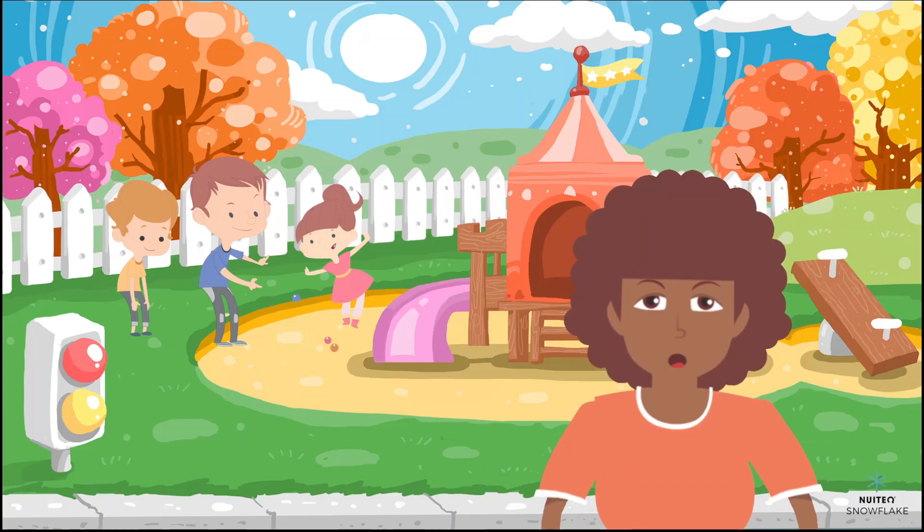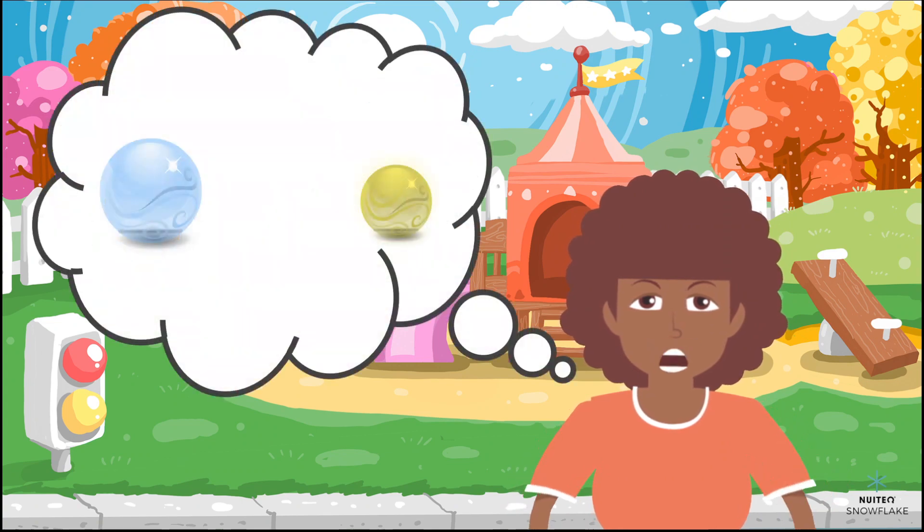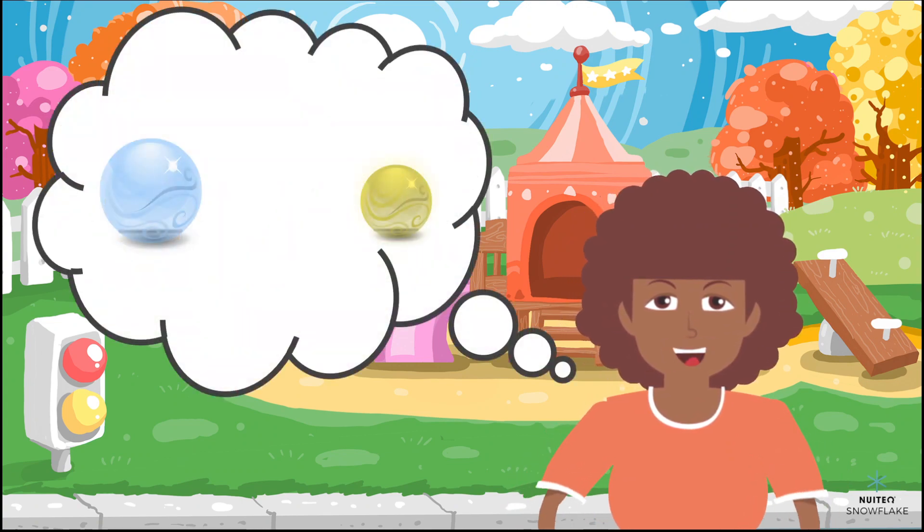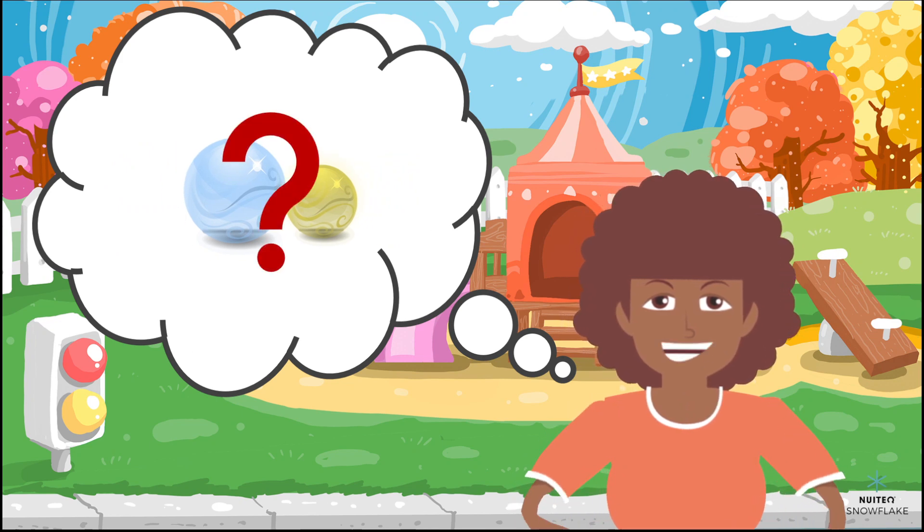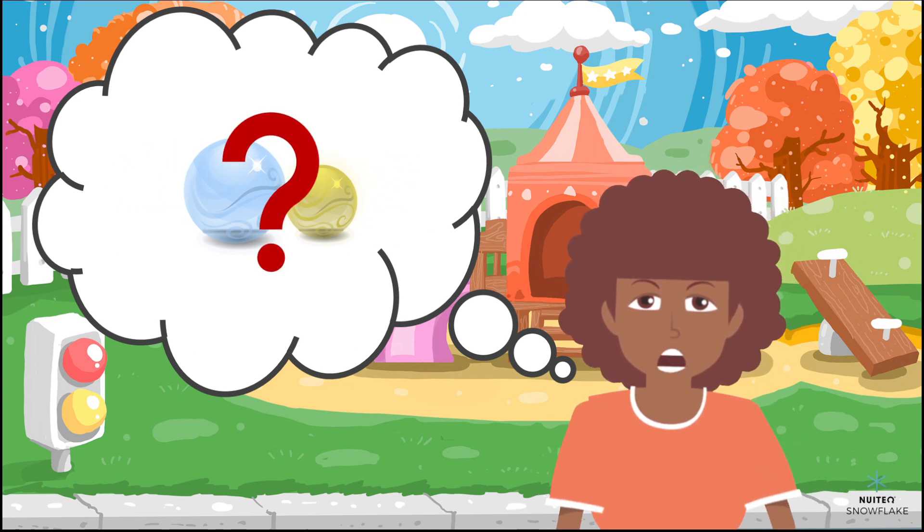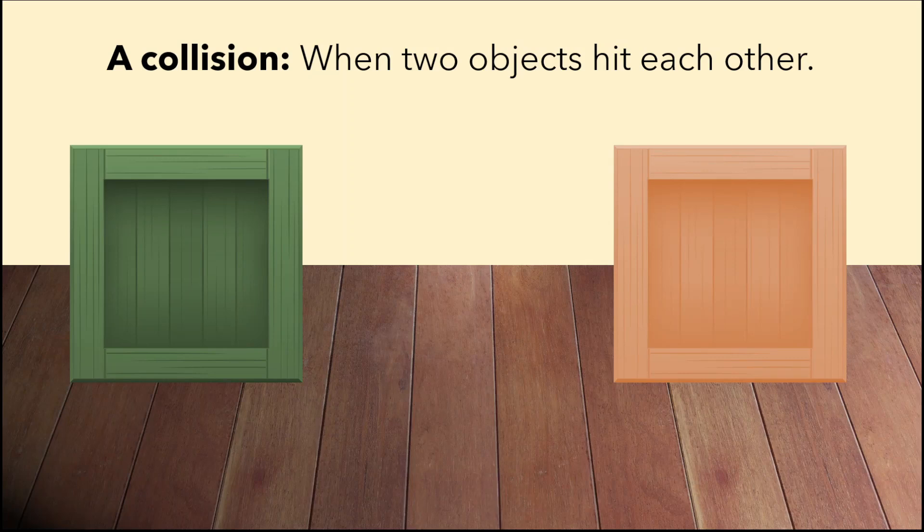Have you ever played marbles? Imagine you have two marbles, one big and one small. You roll them towards each other and they collide. What happens next? Well, a collision is when two objects hit each other, and when they hit, there is a transfer of energy between them.